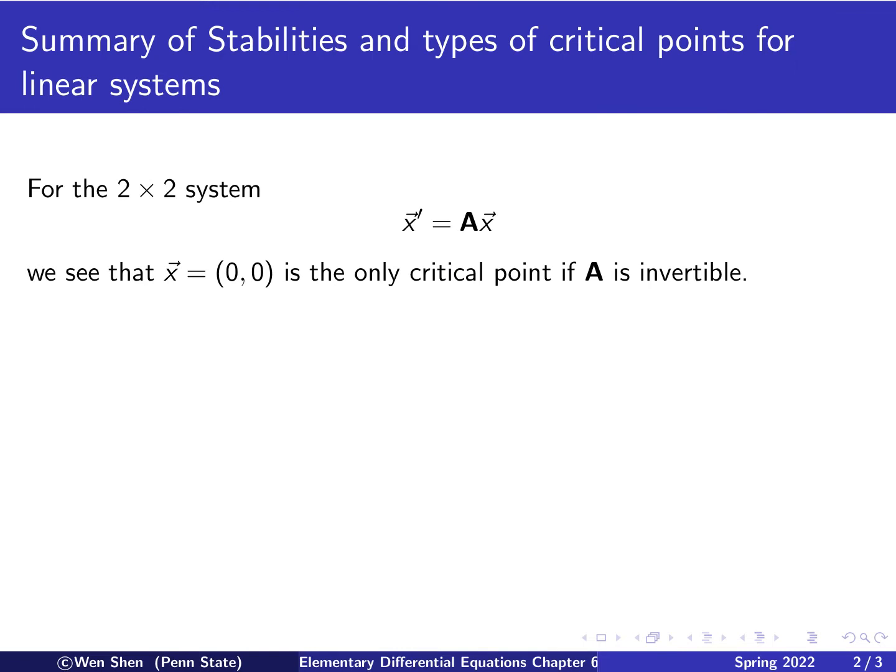In this video, we will go through a summary of stabilities and types of critical points for a 2×2 linear system. We restrict ourselves to 2×2, and therefore A is a 2×2 matrix. We assume that A is invertible, that is, the determinant of A is non-zero, and therefore the origin is the only critical point, and we'll discuss that critical point.